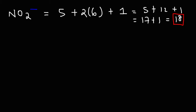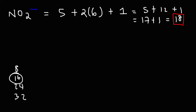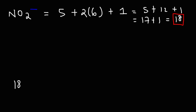There's something you can do to determine the number of lone pairs on the central nitrogen atom. First, identify the highest multiple of 8 just under 18. Multiples of 8 are 8, 16, 24, 32, and so forth — 16 is the highest multiple of 8 under 18. Next, subtract that from 18: 18 minus 16 equals 2. This gives you two electrons, or one lone pair, on the central nitrogen atom.